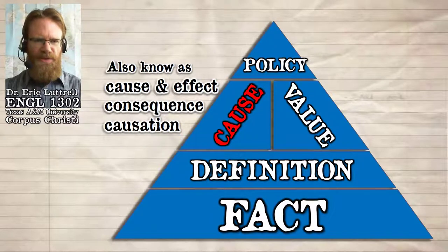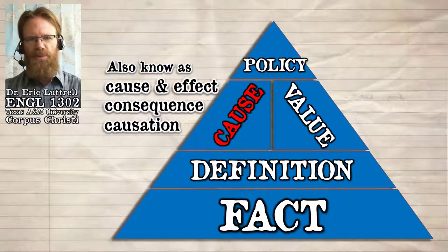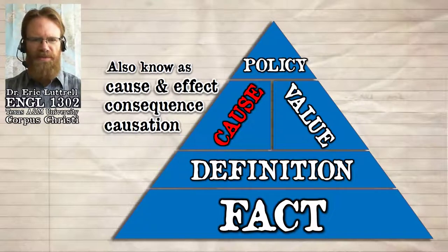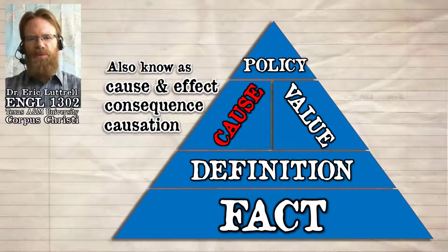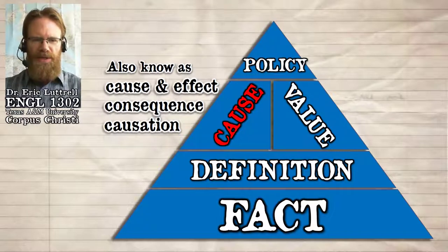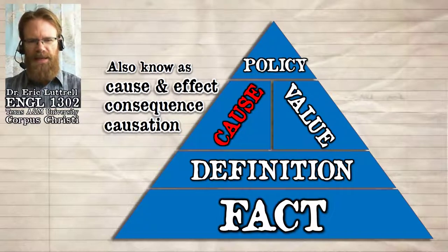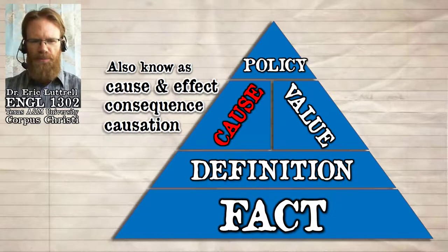When the ancient philosophers in Greece and Rome distinguished between the different points of stasis, they usually just listed four: fact, definition, value (also called evaluation or quality), and policy (also called proposal). They lumped questions of cause and effect in with questions of value. Presumably you could independently verify cause and effect relationships, just like you could verify facts. And in some cases that's true, but in some cases it's not.